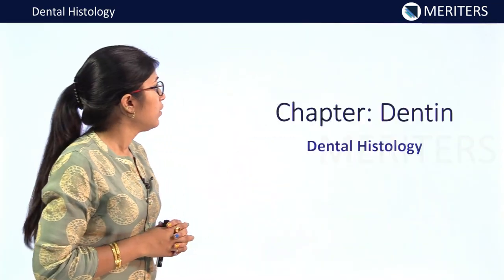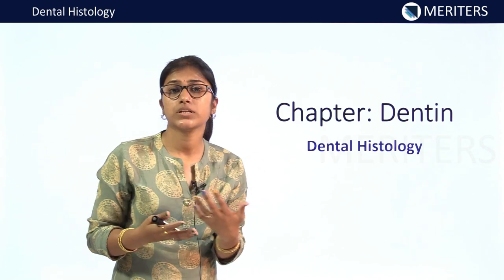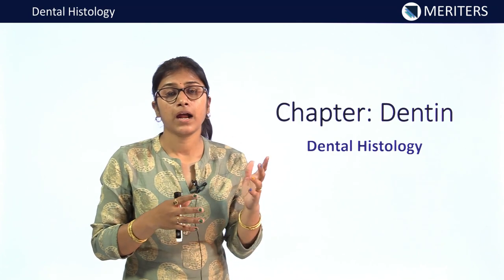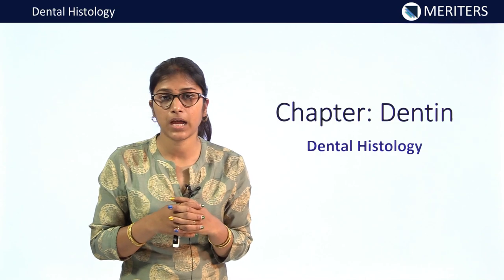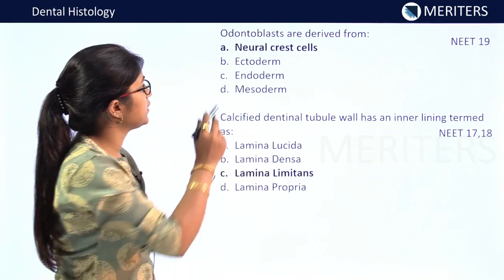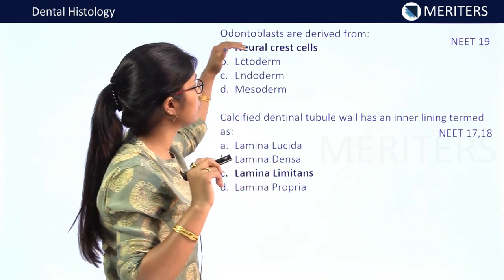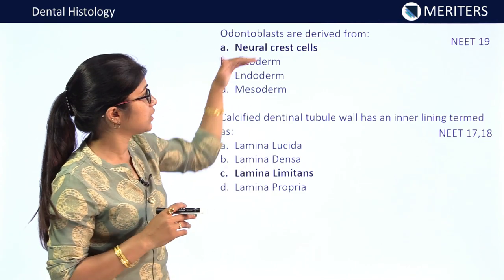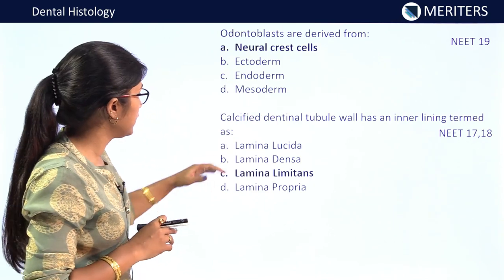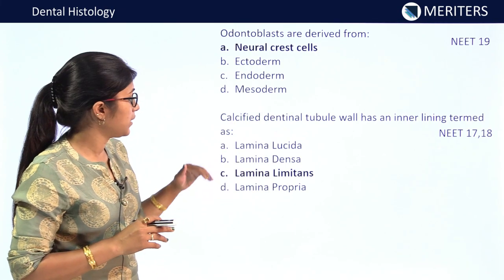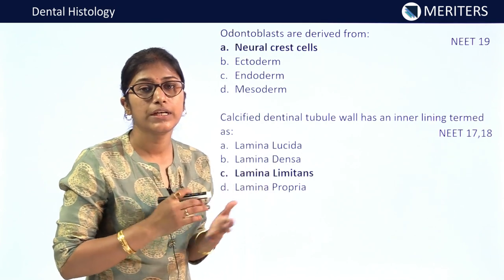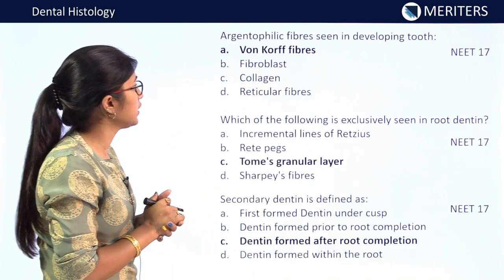To summarize enamel: questions were basically from structure of enamel — that has to be cleared — and some IBQs were there. Now for dentine: odontoblasts are derived from neural crest cells (ectomesenchymal cells) — NEET 2019. Calcified dentinal tubule wall has an inner lining termed lamina limitans — appeared in NEET 2017 and 2019. Questions in dentine were also from structure only.